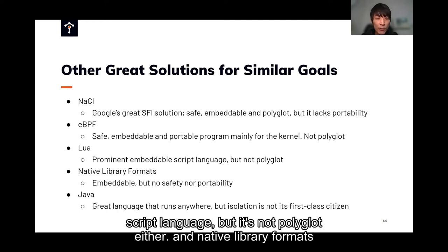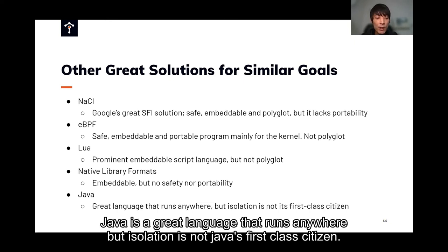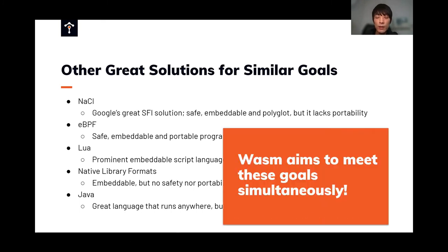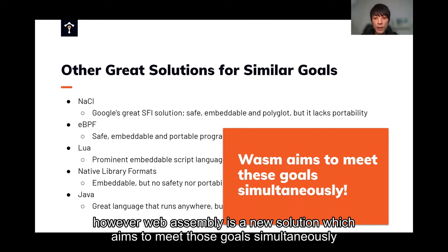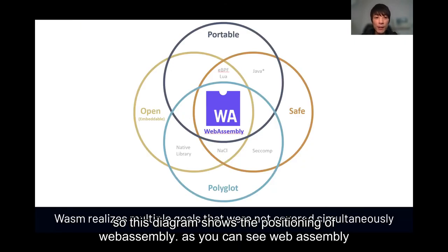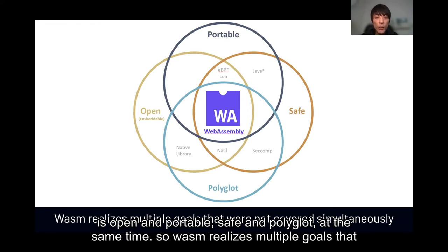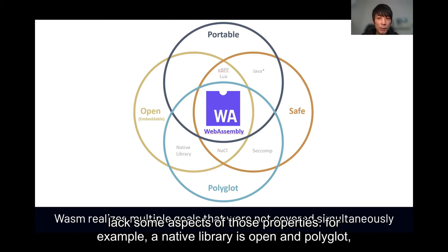Native library format is, of course, embeddable. But because it's a native library, it has no safety and no portability. And Java is a great language that runs anywhere, but isolation is not Java's first-class feature. So existing solutions have similar goals, but none of them satisfies all the goals at the same time. However, WebAssembly is a new solution which aims to meet those goals simultaneously.